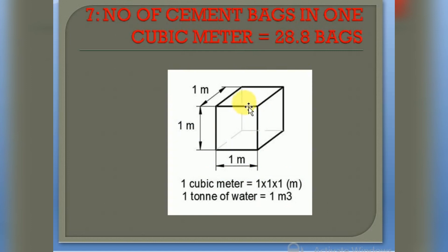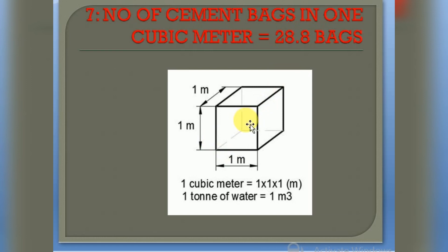Our next point is the number of cement bags in one cubic meter, which is 28.8 bags. So if we make a cube of 1 meter dimension, 28.8 bags of cement will be able to fill this cube.